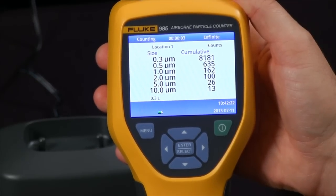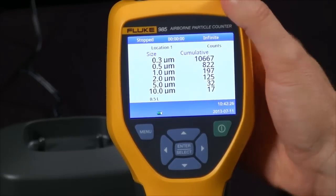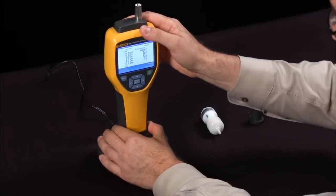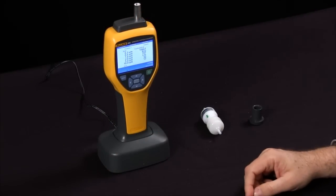Once you have your readings, you can simply place the 985 particle counter in the base and download your data, as well as charge the device for future use.